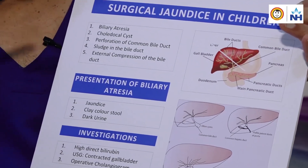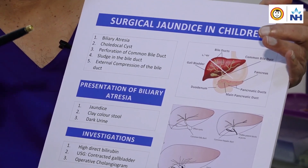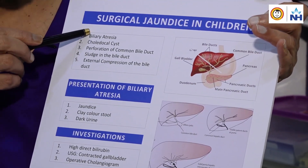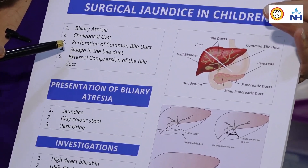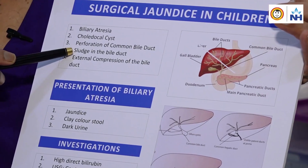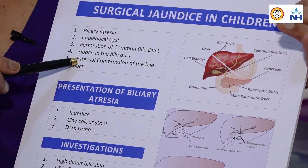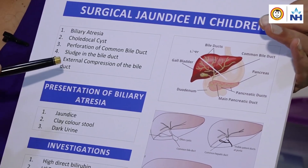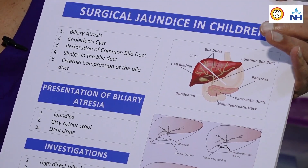In a newborn and an older child, the five common causes of jaundice include biliary atresia, choledochal cyst, perforation of the common bile duct, sludge in the common bile duct, and external compression of the bile duct. Of these, the commonest cause is biliary atresia.